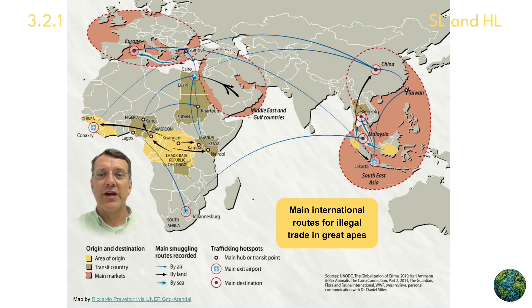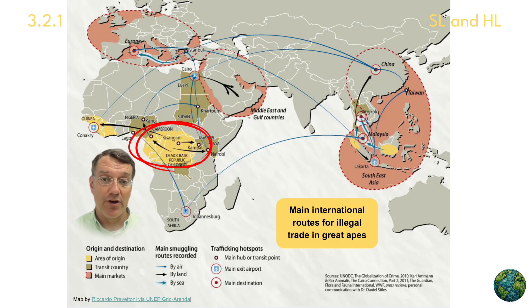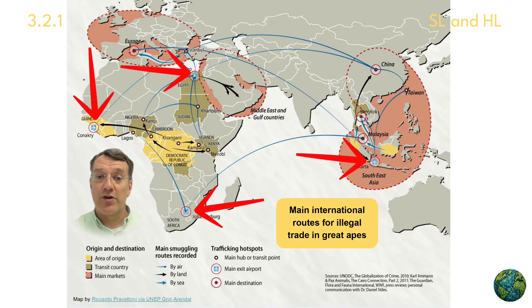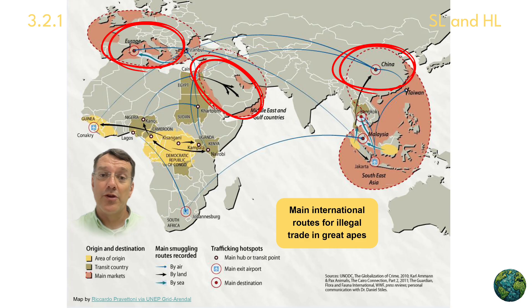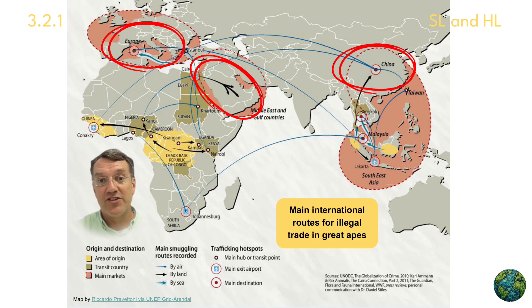The illegal wildlife trade operates through complex international networks. This map shows the main international routes for trafficking great apes. Species are typically captured in biodiversity-rich regions like Central Africa, then transported through major transit hubs and sold in markets across Asia, Europe, and the Middle East. This global trafficking network demonstrates how consumer demand in one part of the world can drive species extinction in another.